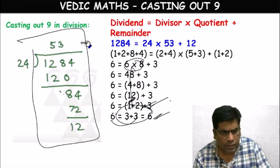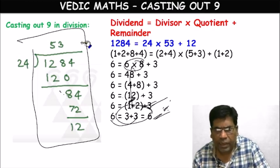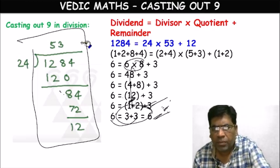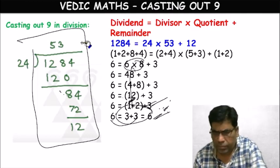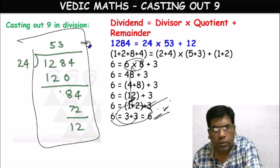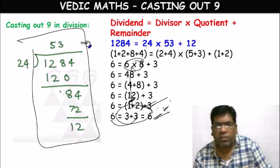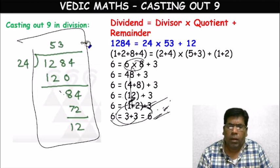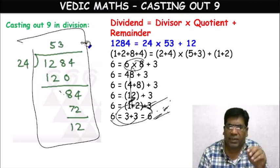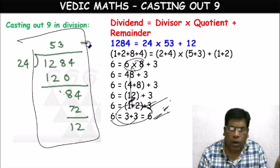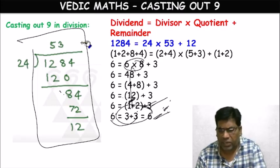In this way, we can check the correctness of any mathematical operation in arithmetic. The main purpose of this Casting Out Nines method is to cross-check whether an arithmetic operation is accurate or not. It can be used in all kinds of arithmetic operations.